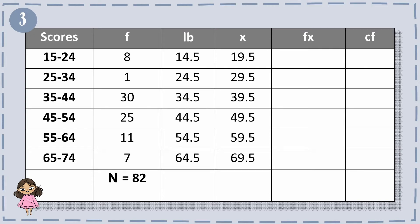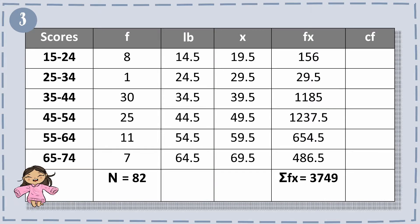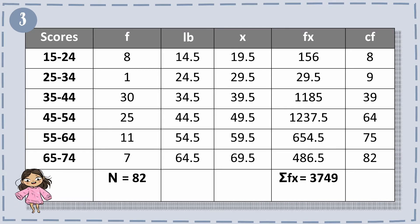For fx: 8 times 19.5 equals 156, 1 times 29.5 equals 29.5, 30 times 39.5 equals 1,185, and so on, in a total of 3,749. For cf, we have 8, 9, 39, 64, 75, and 82. The last value of cf must match the summation of frequency.